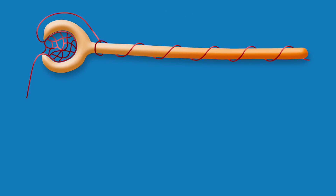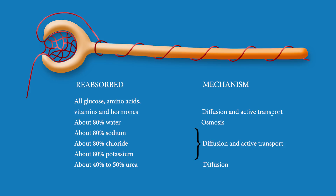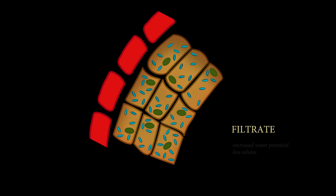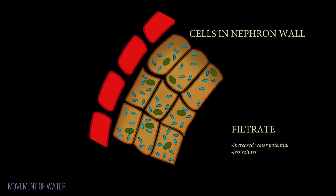This is necessary because glucose is a useful substance needed by the body. Amino acids, vitamins, sodium ions, and chloride ions are also reabsorbed here. The removal of all these solutes from the filtrate greatly increases its water potential.